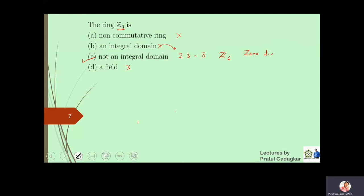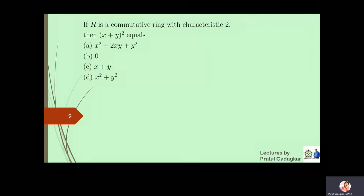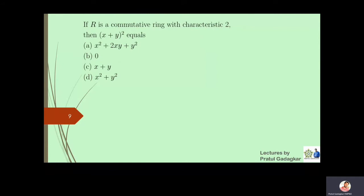The next objective is: how many idempotent elements are there in an integral domain? Idempotent elements satisfy a squared equals a. In an integral domain, only 0 and 1 satisfy this property — 0 squared equals 0 and 1 squared equals 1. Therefore, an integral domain has exactly two idempotent elements.